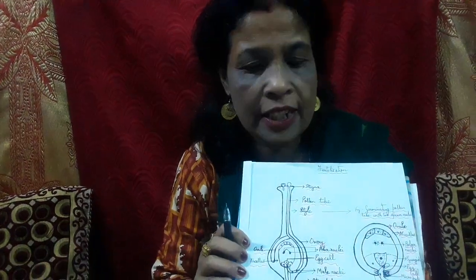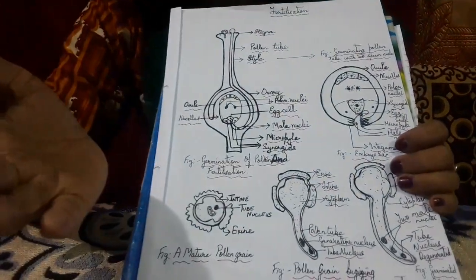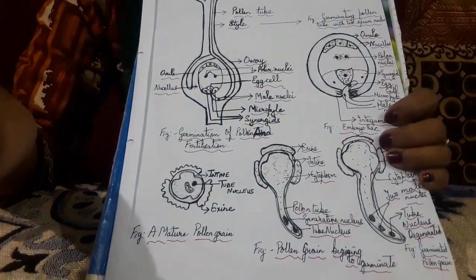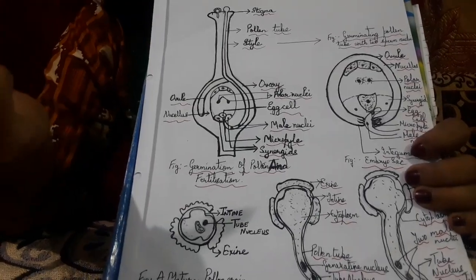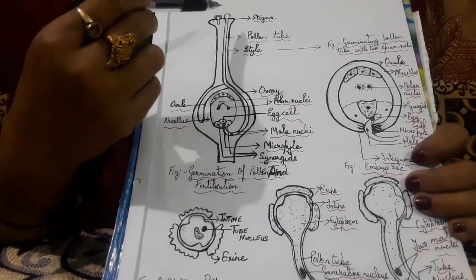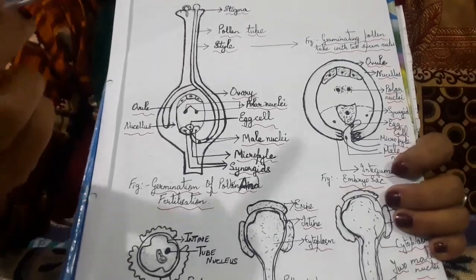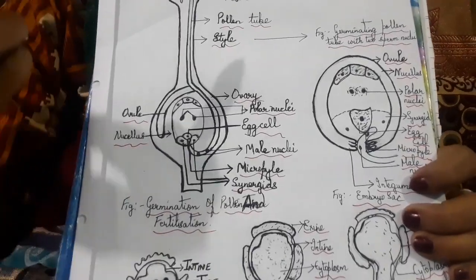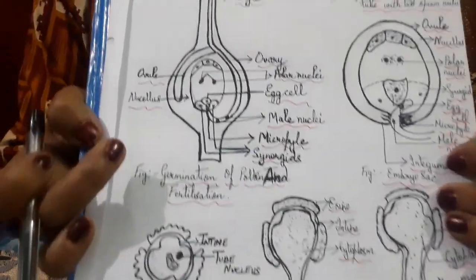In the previous topic, what we had discussed about pollination: it is a transfer of pollen grains from the anther to the stigma of the flower. Now, after pollination, what is the next event? That is the germination of the pollen grain.